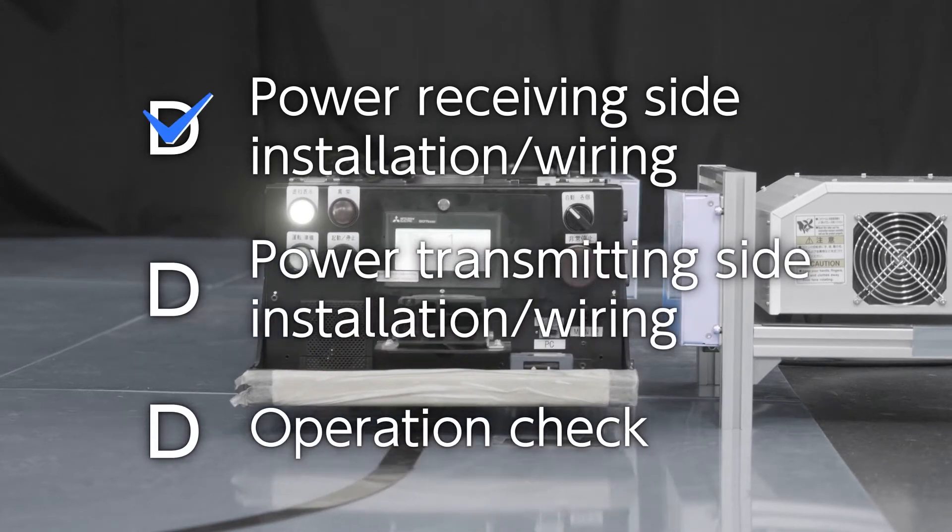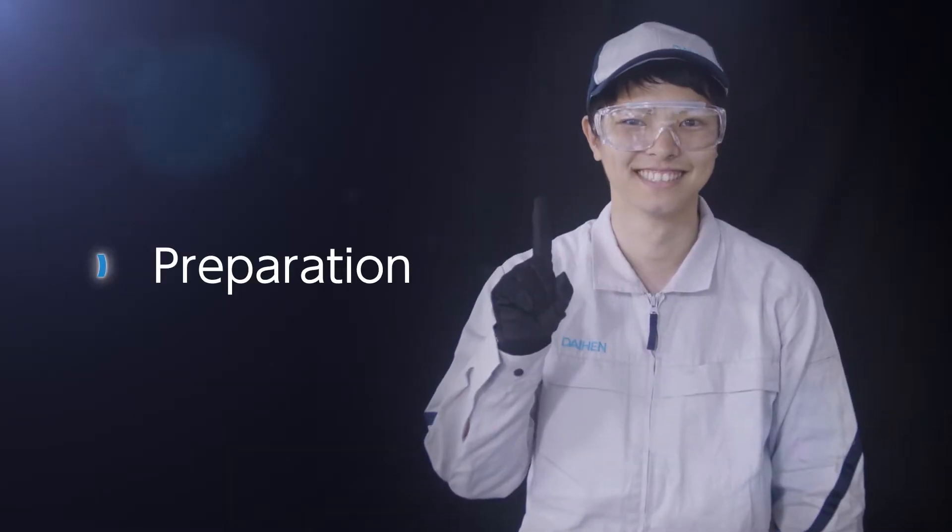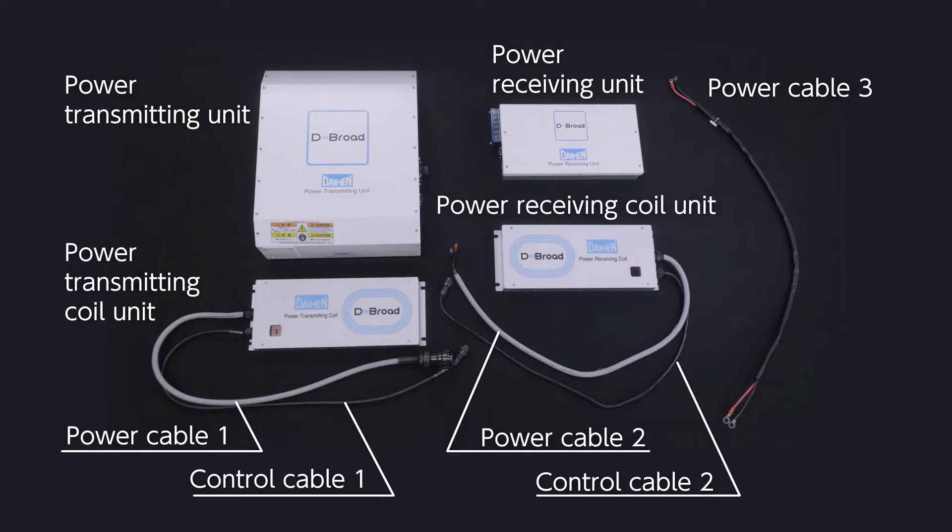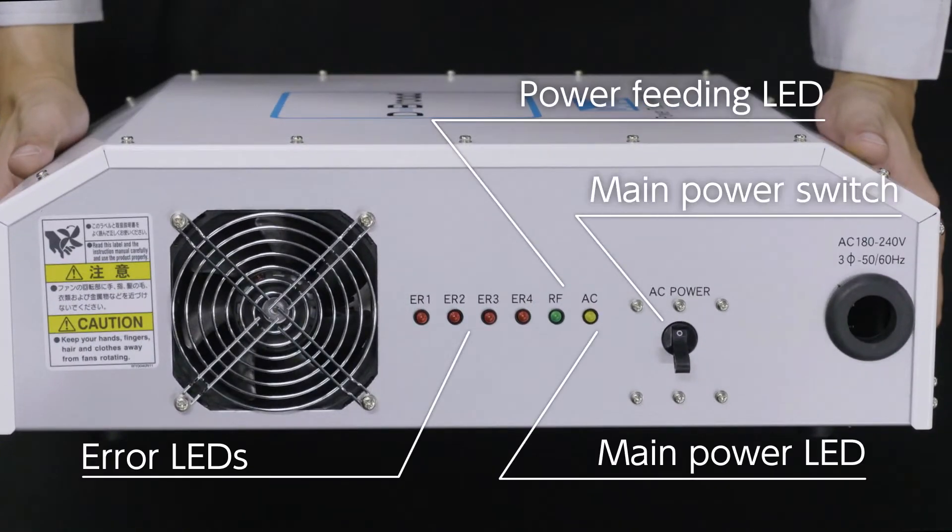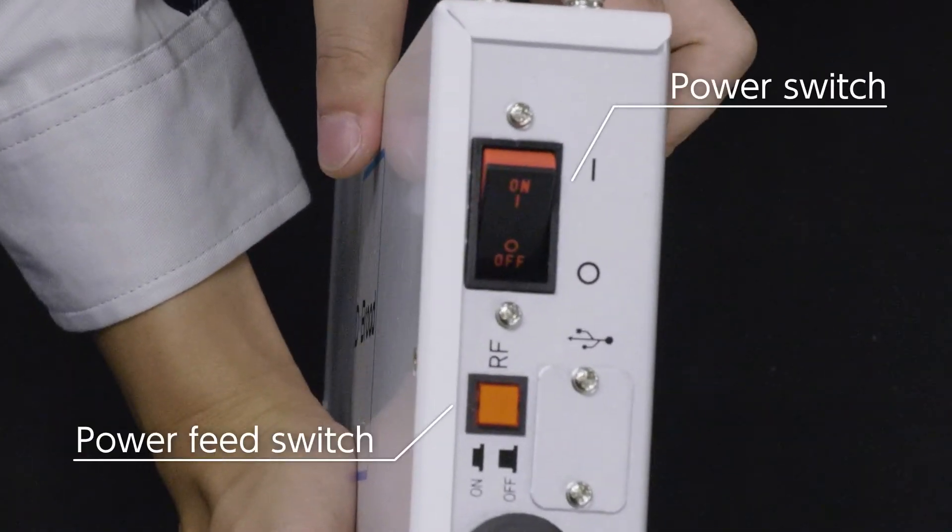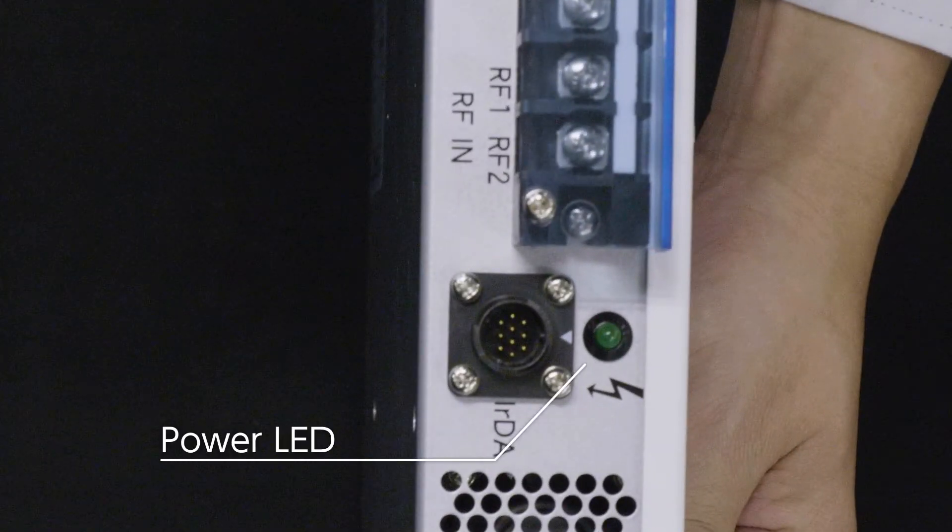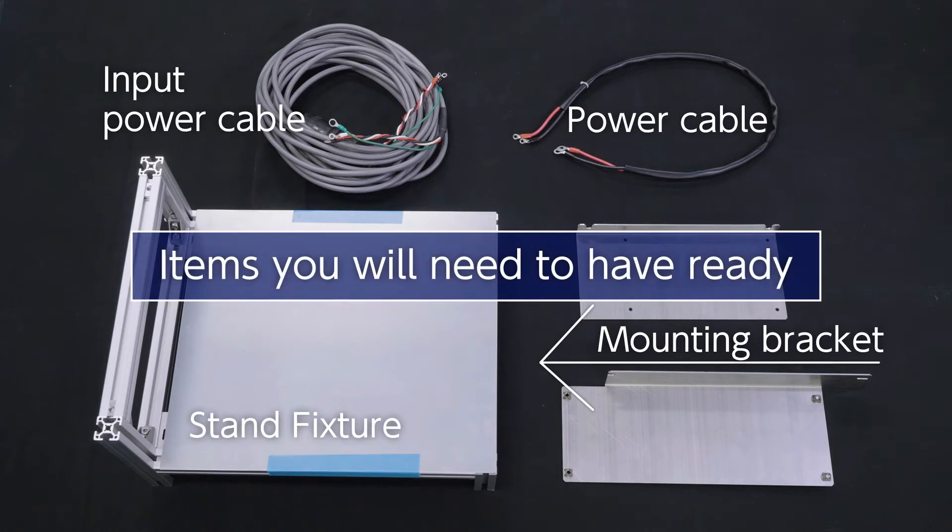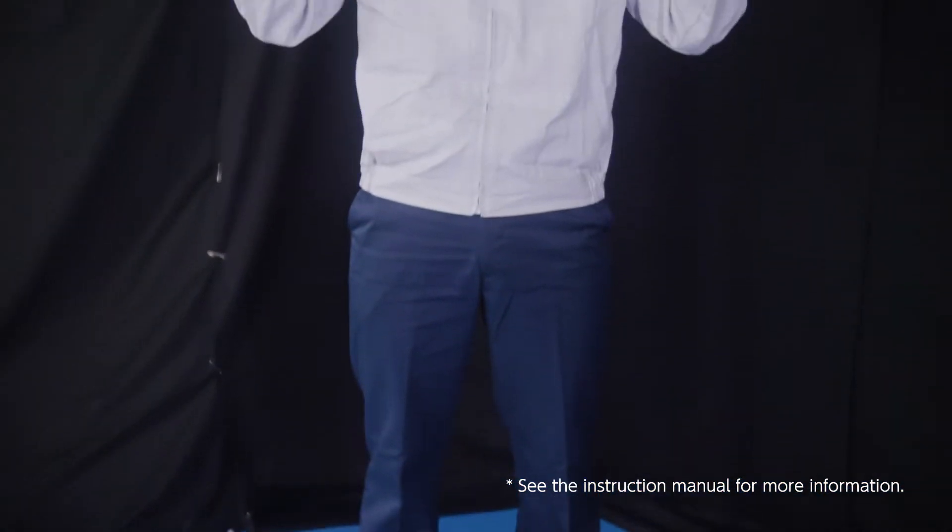You can set up D-Broad system in just three easy steps. Before setting up, please see the preparation. Check the system configuration of the power transmitting side and the power receiving side. Here are the items you will need to have ready. Read the cautions in the manual carefully.